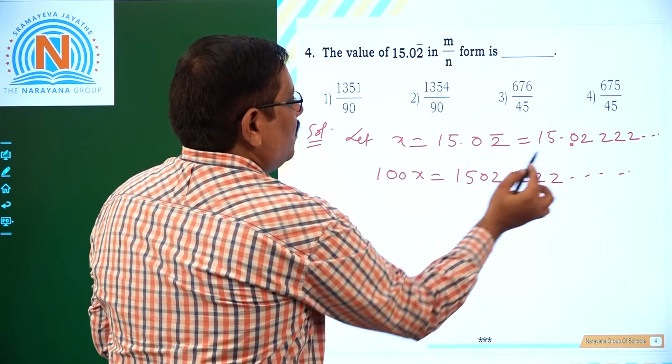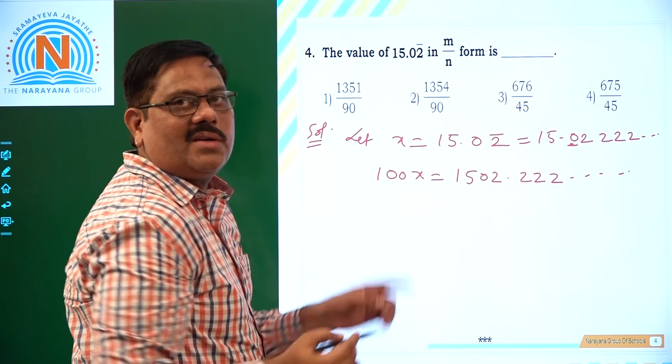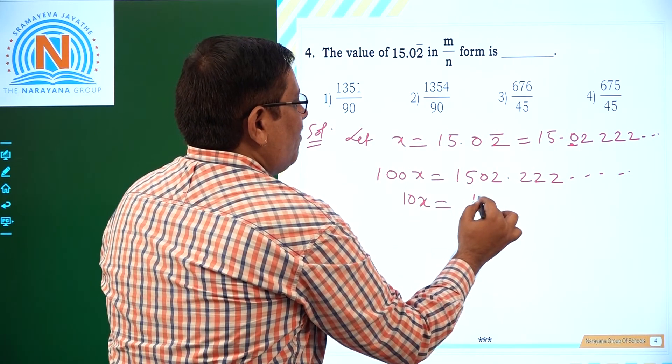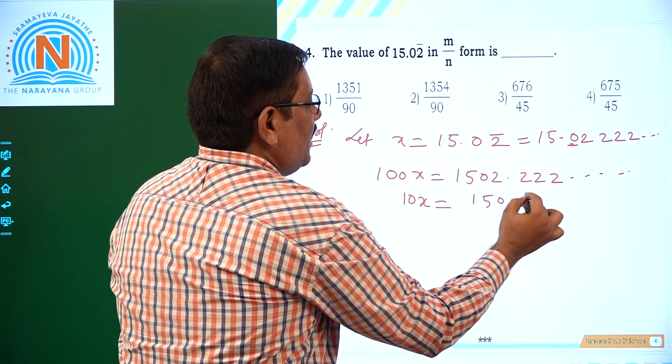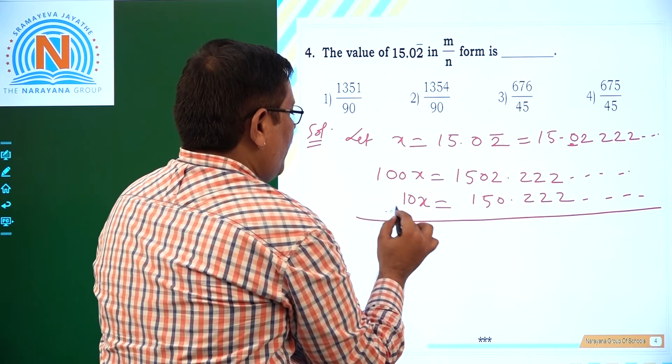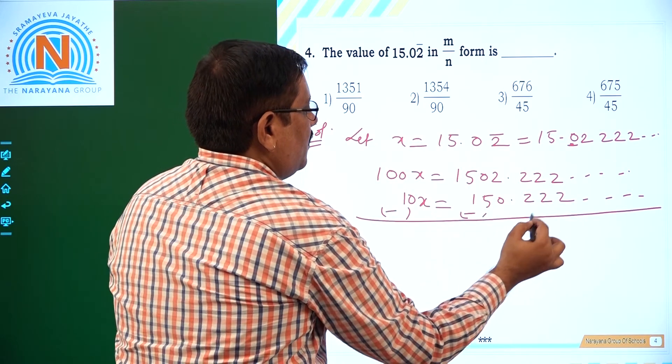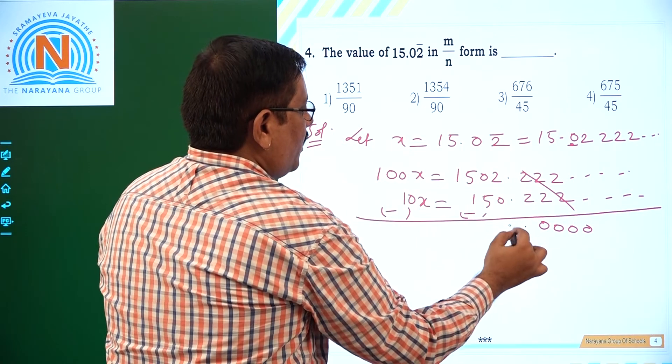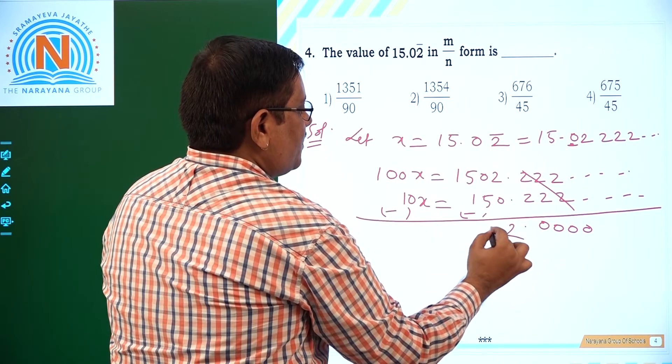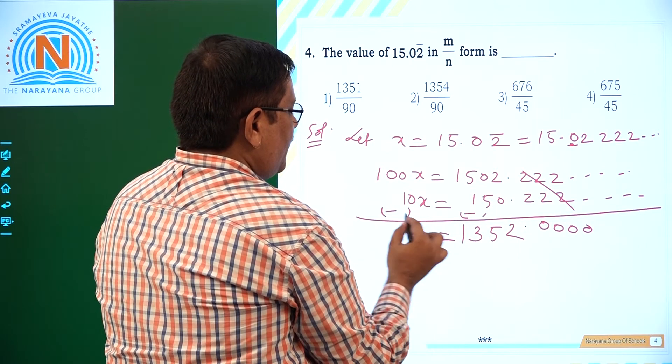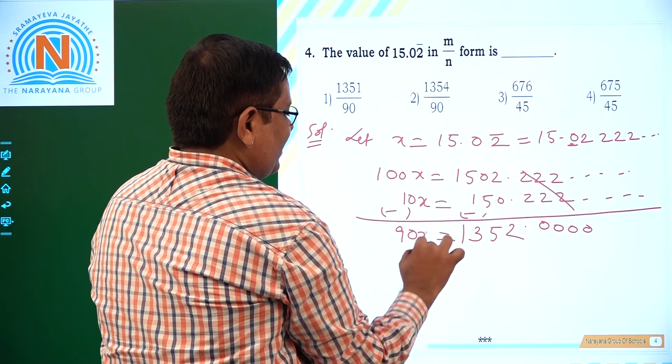After that, what to do? There is 1 digit which is not repeating. So we have to multiply with 10. So that we have 10x as 150 decimal 22. So we have to subtract. This entire part cancels. So it all becomes 0. So 2 here. And it is 10 minus 5 is 5. And it is 4 minus 1. That is 3, 1. That is equal to here. It is 90x.